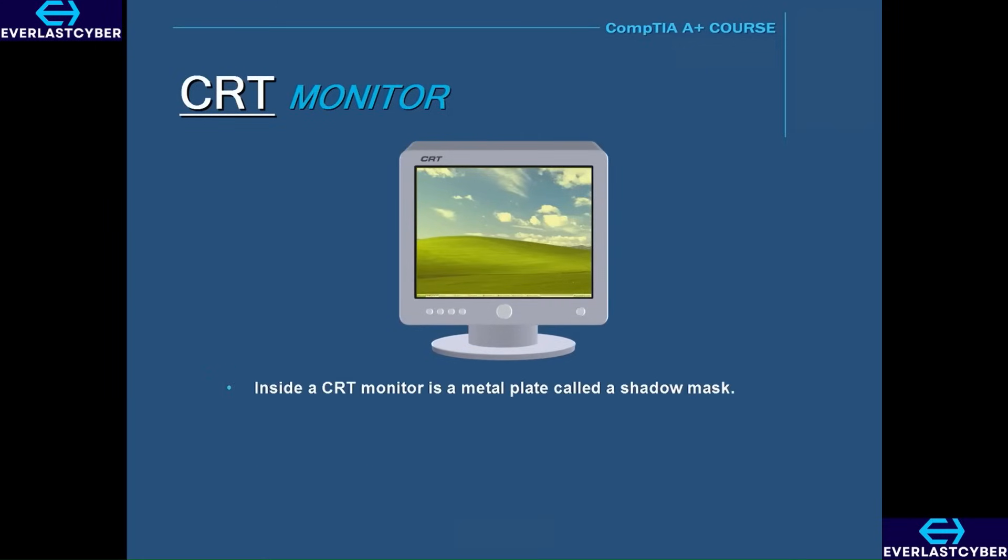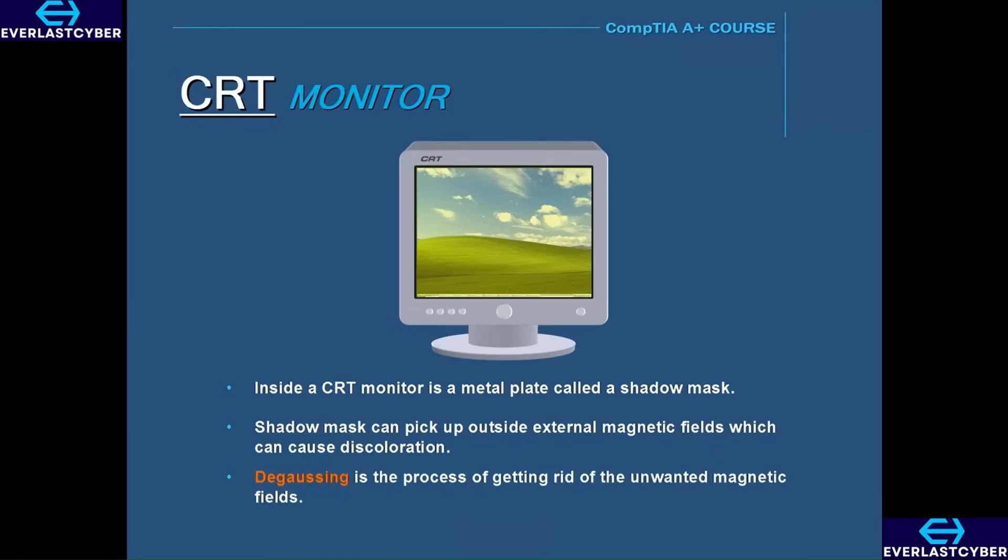Inside CRT monitors is a metal plate called a shadow mask. This metal plate can pick up external magnetic fields, which can cause discoloration on the screen. Because of this, cathode ray tube monitors need to be degaussed. Degaussing is the process of getting rid of the unwanted magnetic fields, and most CRTs do an automatic degauss when the monitor is turned on. Or the monitor may have a button that you can press to do a degauss.